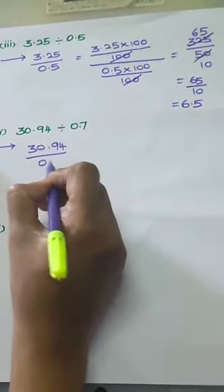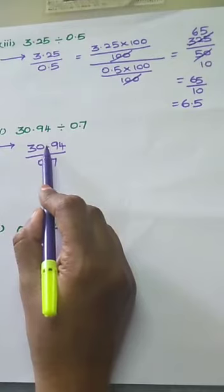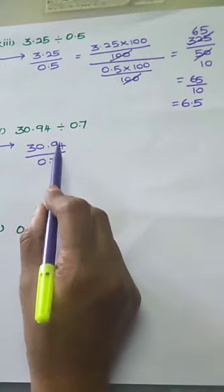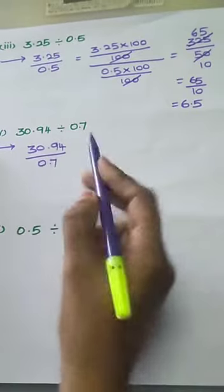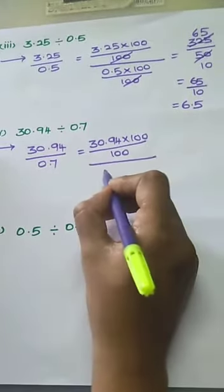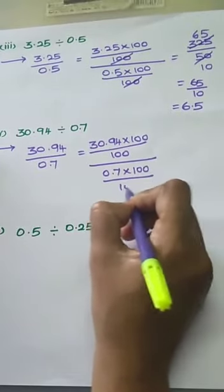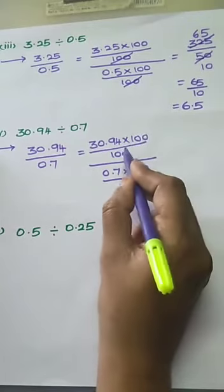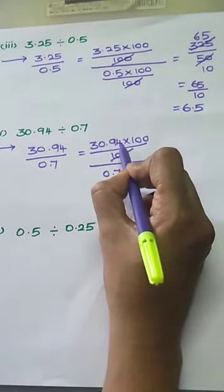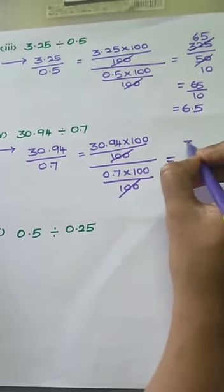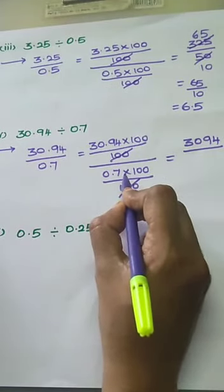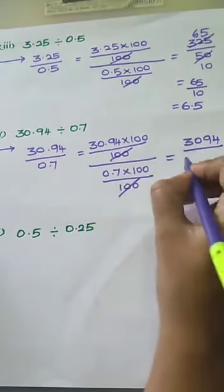Next problem: 30.94 divided by 0.7. We need whole numbers, so we remove the decimal point. The numerator has two decimal places and the denominator has one place. We choose the maximum value — two decimal places means we choose 100. So 30.94 into 100 by 100, and 0.7 into the same value 100 by 100. The 100s cancel. Multiplying by 100 moves the decimal point two places right, giving numerator 3094. For 0.7 into 100, the decimal point moves two places right but we have only one place, so we add an extra zero, giving 70.